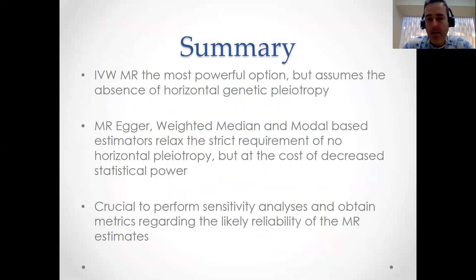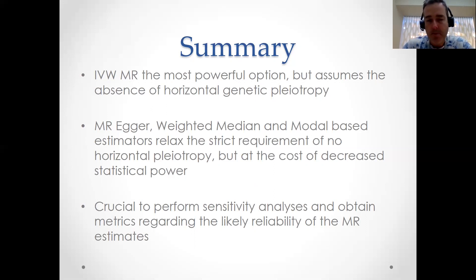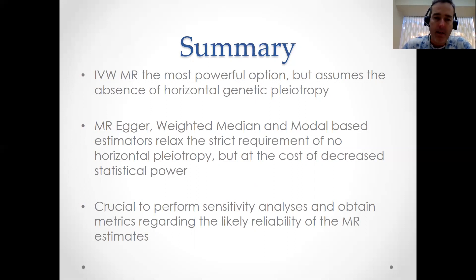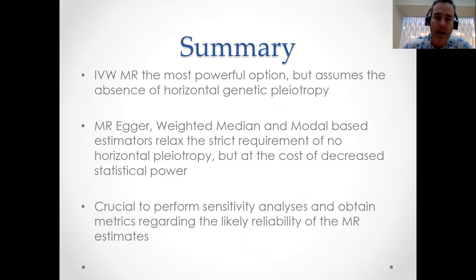In summary, for this entire lecture two session, we've looked at inverse variance weighted Mendelian randomization — the most powerful option for doing MR, but its weakness is that it assumes the absence of horizontal genetic pleiotropy, which obviously may not be the case in reality. We've looked at a number of other estimators that relax this strict requirement of no horizontal pleiotropy. The cost is that these other approaches have less statistical power than inverse variance weighted Mendelian randomization.